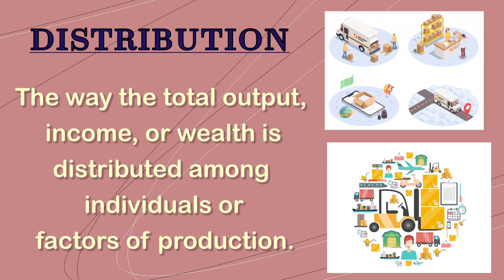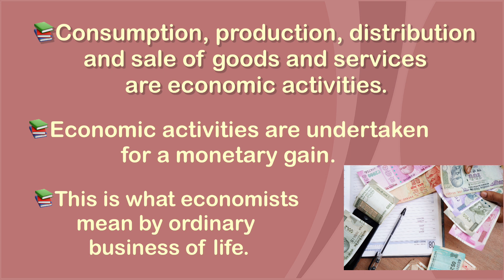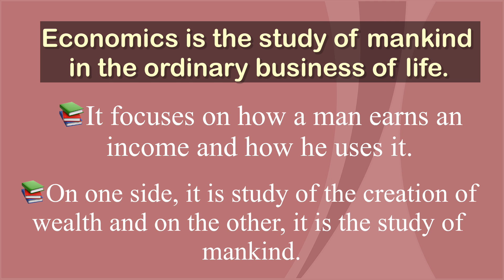The way the total output, income, or wealth is distributed among individuals or factors of production is called distribution. Consumption, production, distribution, and sale of goods and services are economic activities, which are undertaken for a monetary gain — this is what economists mean by 'ordinary business of life.' So Marshall's definition focuses on how a man earns an income, how he uses it, and the study of both the creation of wealth and mankind.